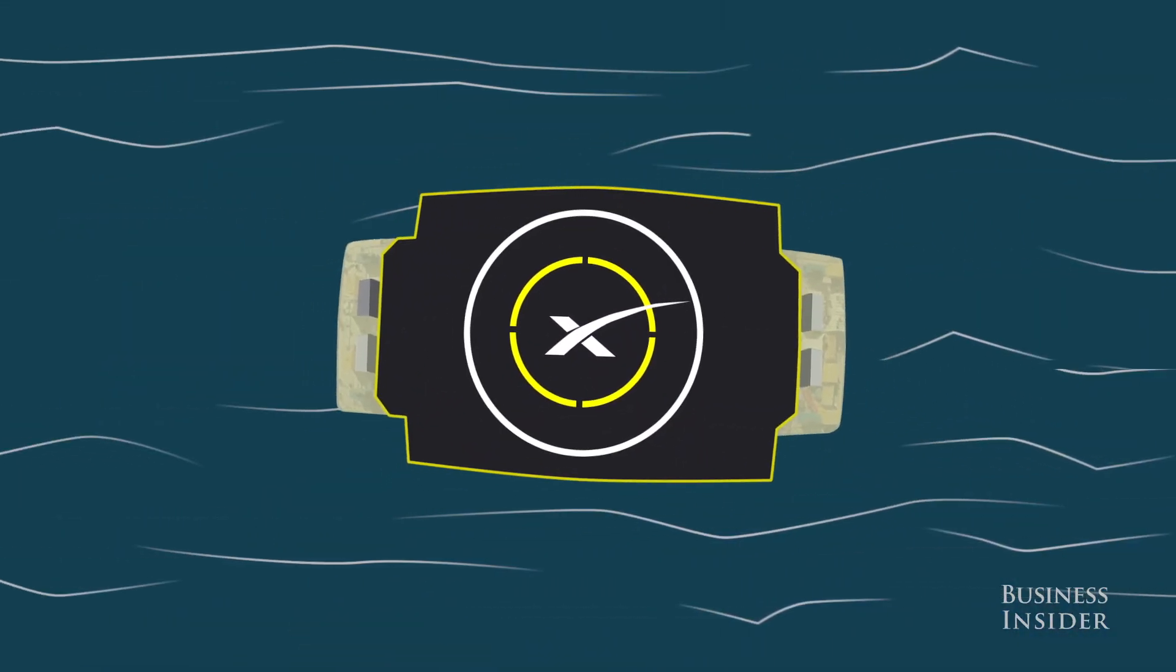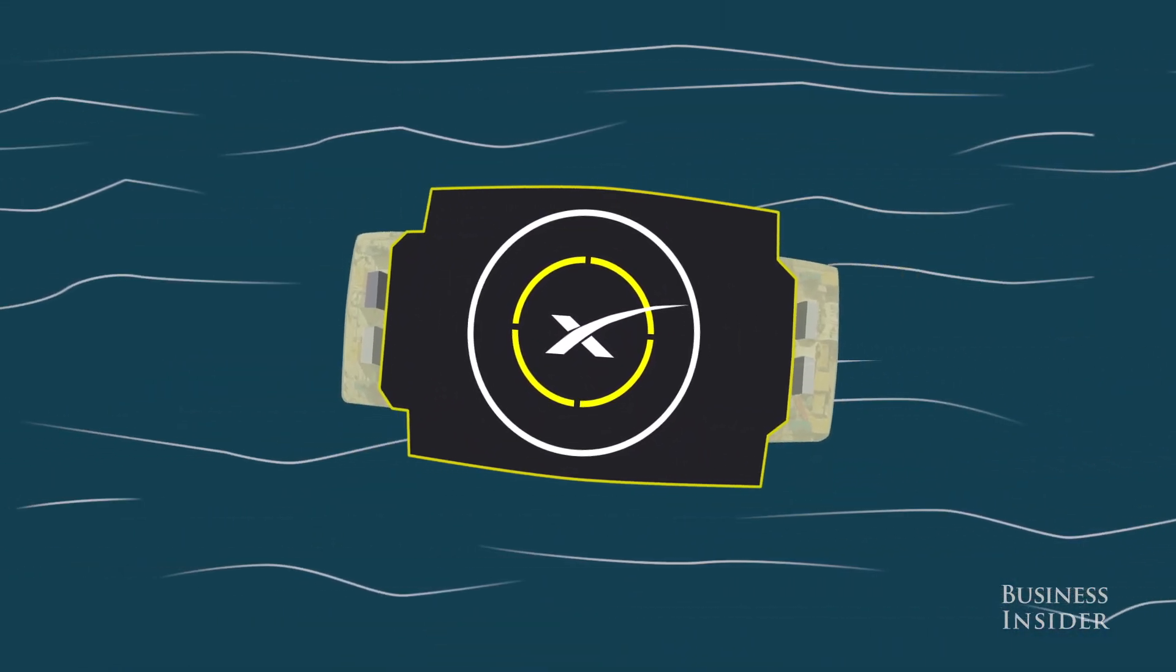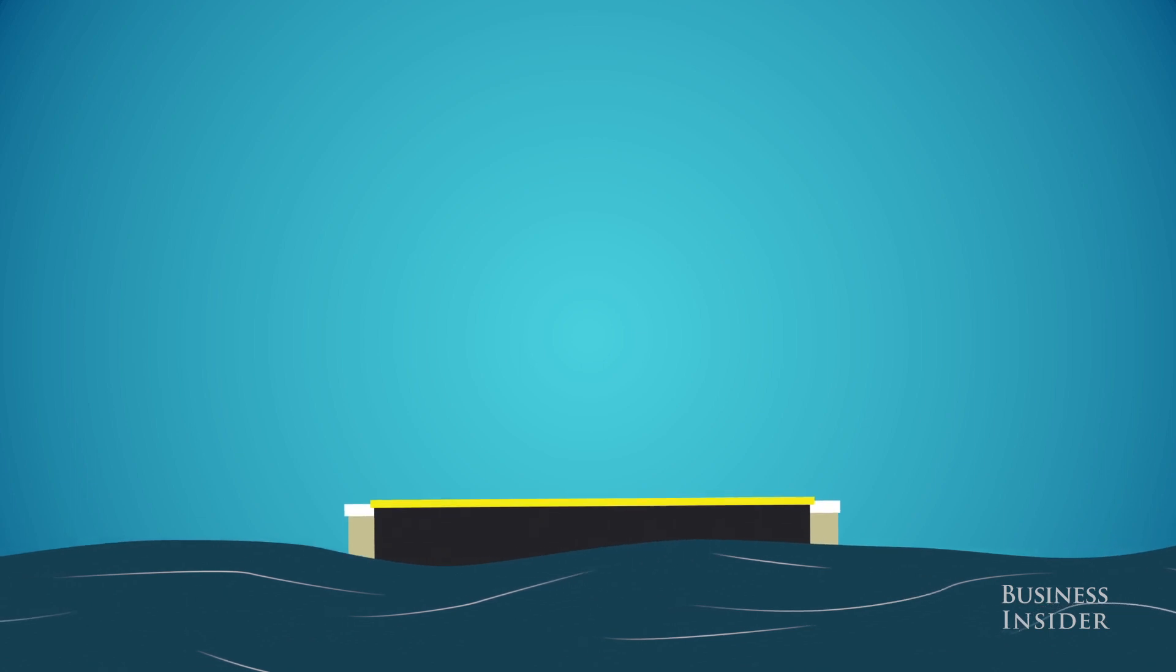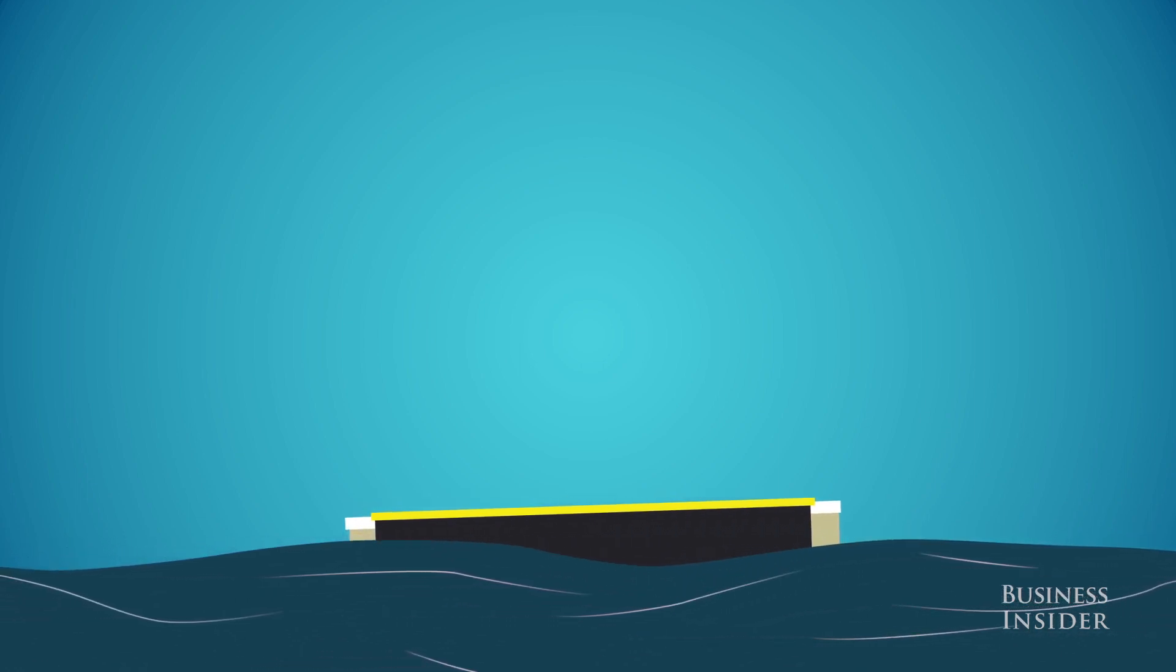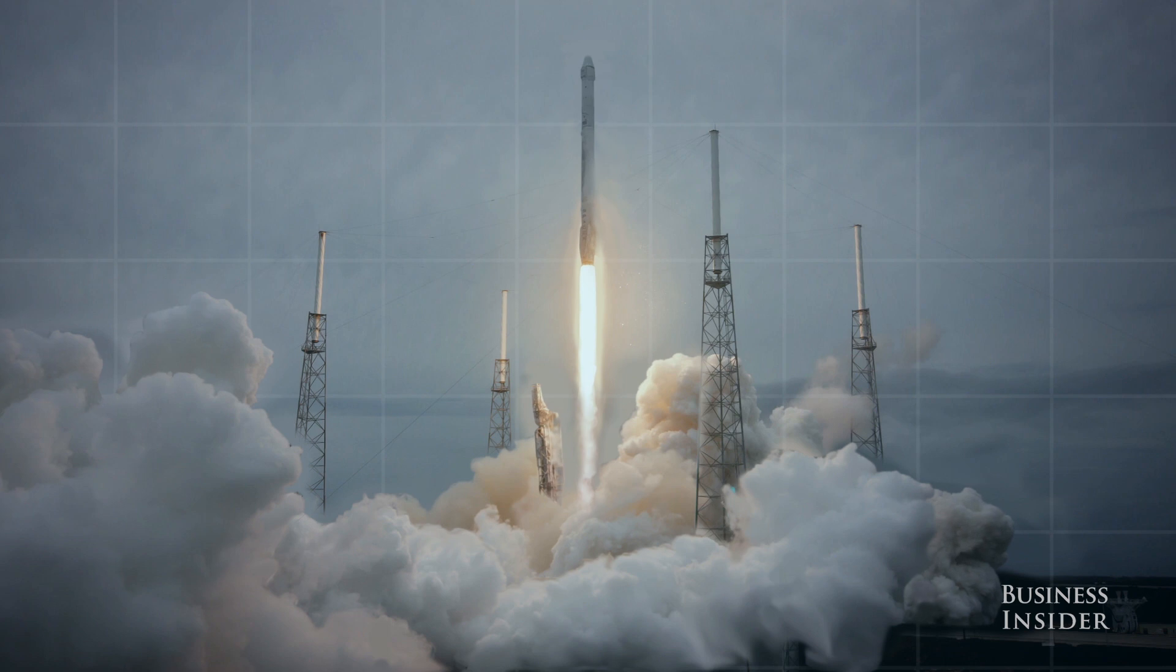To do this, SpaceX has to prove that they can reuse their rockets by landing one on top of a floating platform in the middle of the ocean. If they succeed, this could drastically reduce the cost of spaceflight, making it available to the masses.